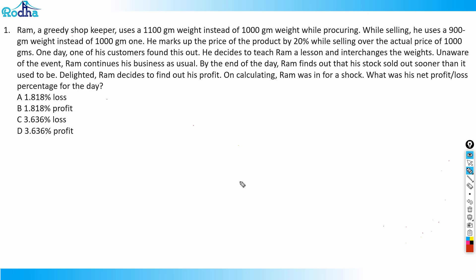Delighted, Ram decides to calculate his profit, but was in for a shock. What was his net profit or loss percentage for the day? So understand this: he uses an 1100 gram weight instead of 1000 gram weight while procuring, and while selling he uses a 900 gram weight instead of 1000 gram.